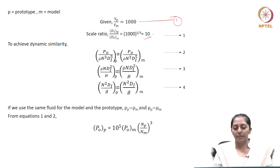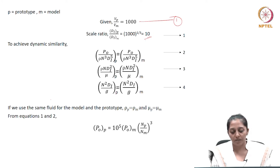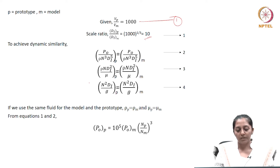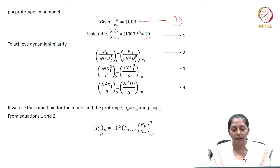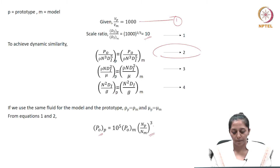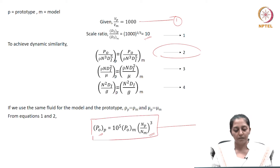In order to achieve dynamic similarity, your dimensionless numbers should be equal at the two scales — the model and the prototype. We are using the same fluid, so the fluid properties will not change at the two scales and we can negate those terms. By the equality of these dimensionless numbers for dynamic similarity, you can find a correlation between the power consumed and the impeller speed at the two levels, where the linear dimensions are changing by a factor of 10.